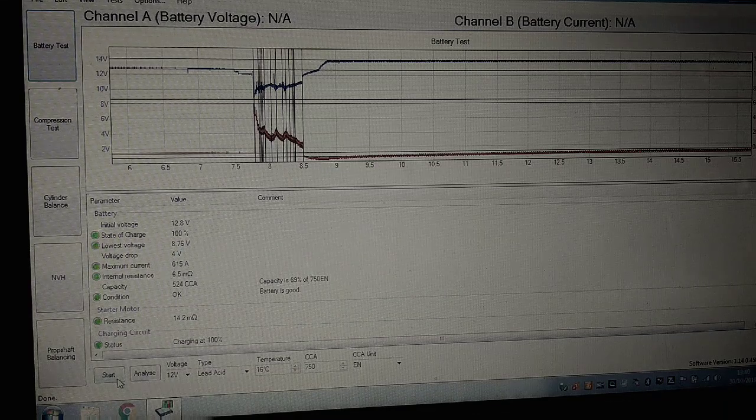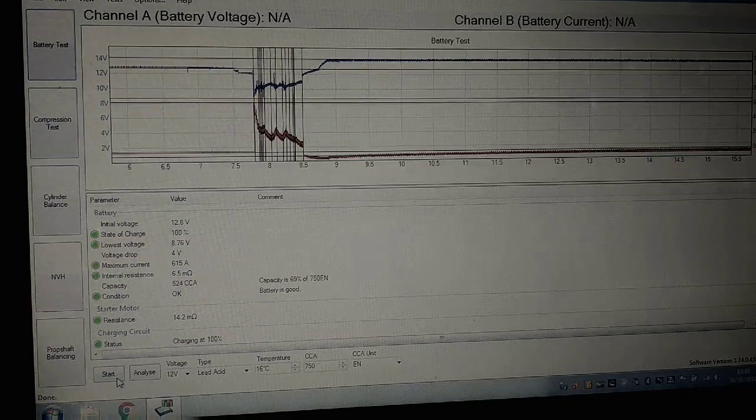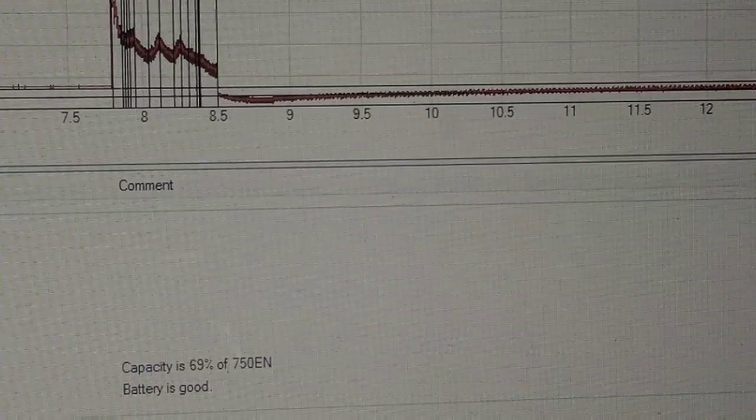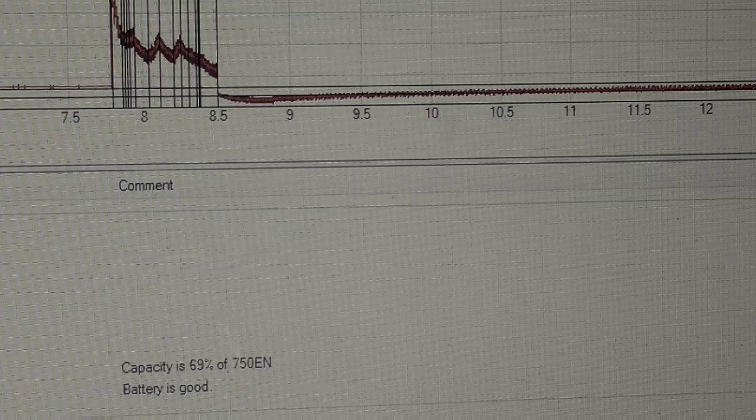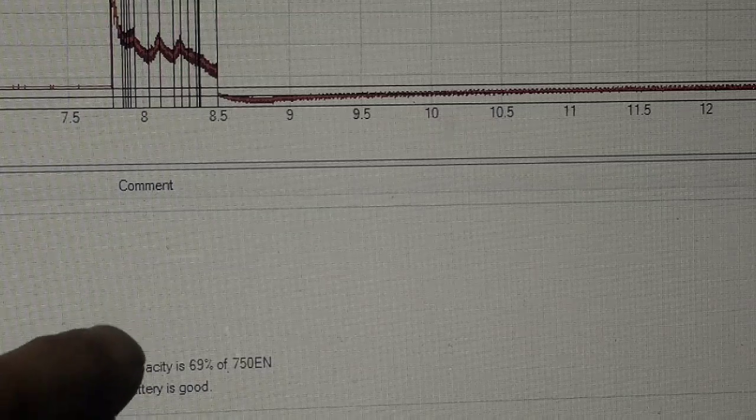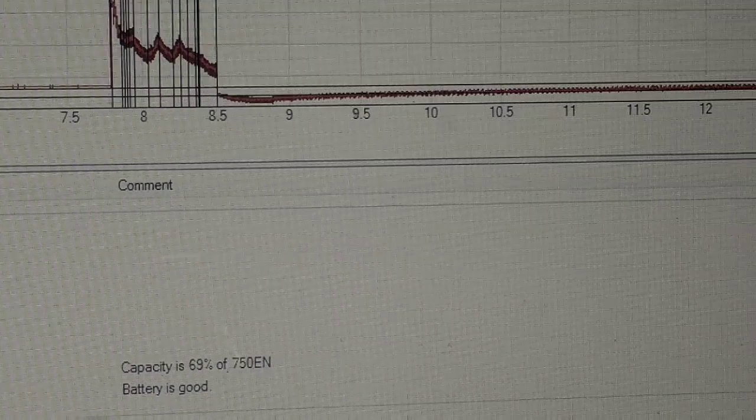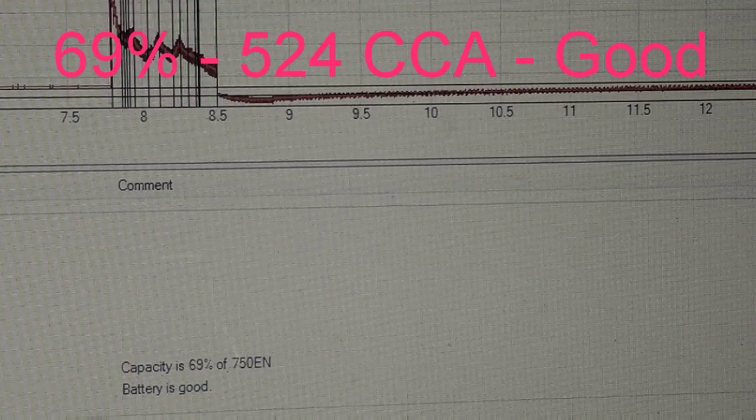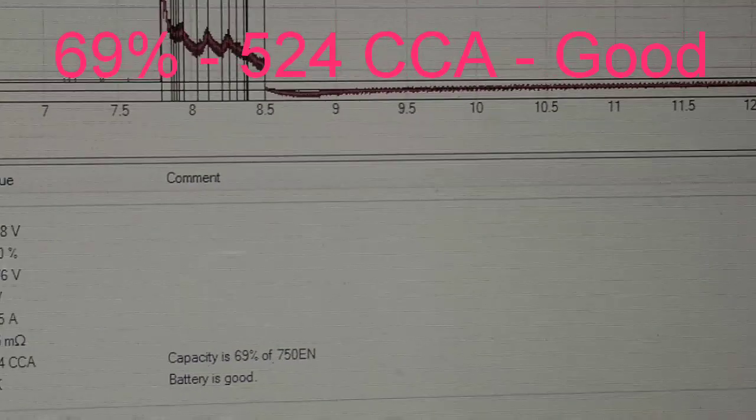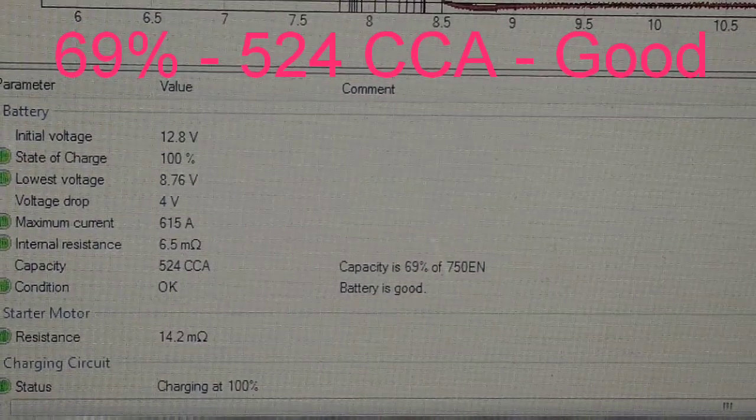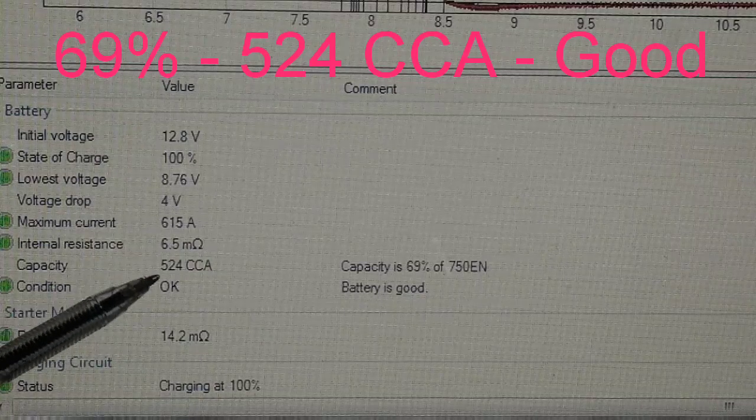Okay, and the Pico results are in. So the Pico is saying battery is good at 69% or 700. If you look across, it's showing 524 cold cranking amps, which is 69%.